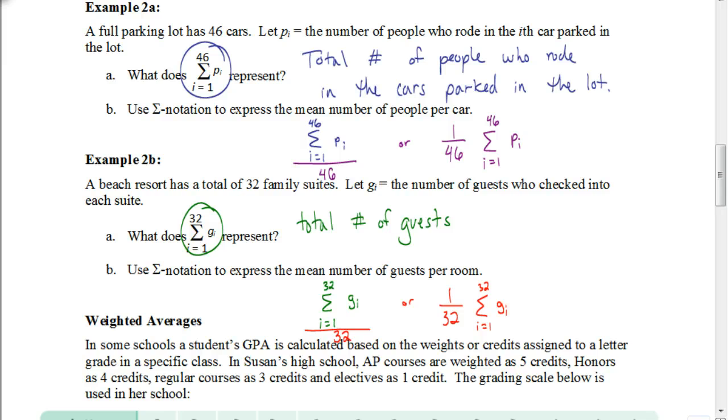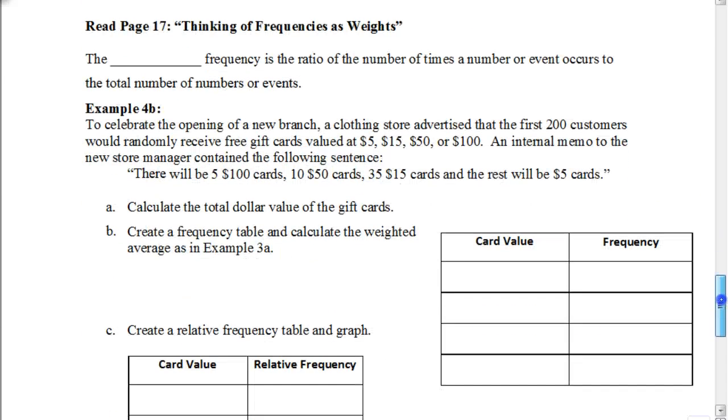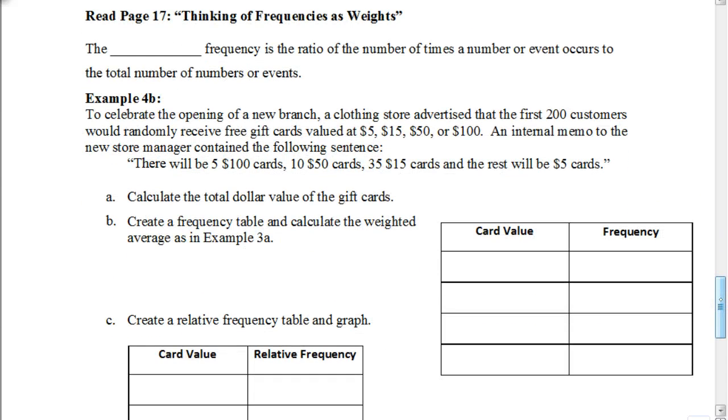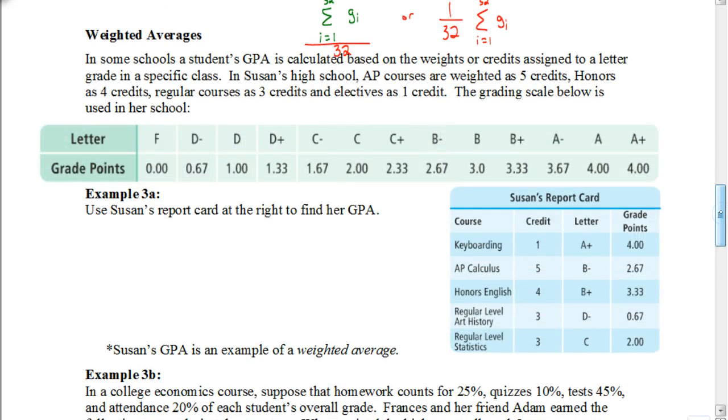So there you have it. That is how you use summation notation to find the average. So that is where we're going to end at this particular video. In the next video, we're going to be looking at how to find weighted averages. And in the third video, we're going to be looking at frequency tables. So with that, we'll stop. So good luck as you work on the rest of this section.